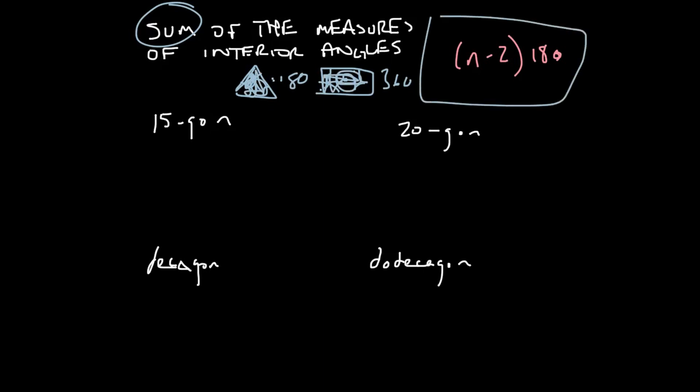Okay, here's the formula right here. N minus 2 times 180. All right, so what we do is N is the number of sides. Number of sides. That was very poorly written, but betterly explained.